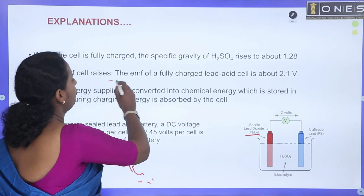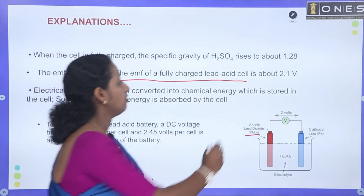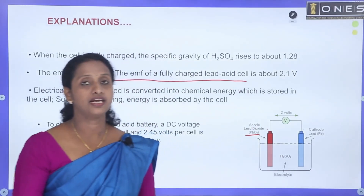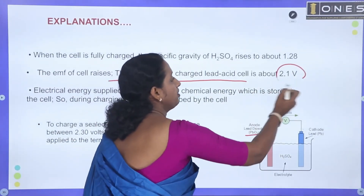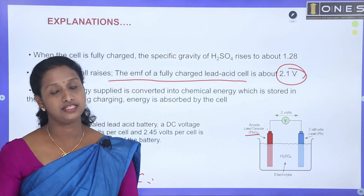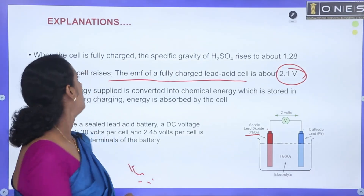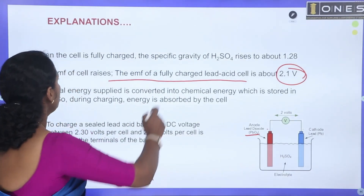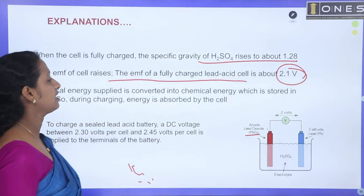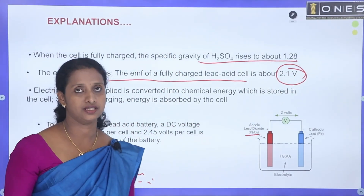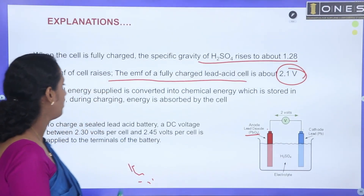The EMF of a fully charged lead-acid cell is a maximum of 2.1 volts. The specific gravity of hydrogen sulfate rises up to 1.28 or more than 1.28.